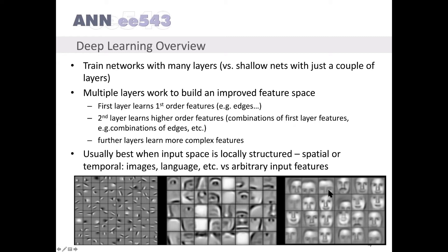For example, in a face recognition application, the network may learn faces. Instead of just three layers, this kind of feature may be obtained across several layers. Deep learning is usually best when the input space is locally structured spatially or temporally — so images, language, etc. — versus arbitrary input features.